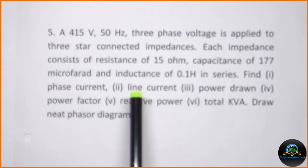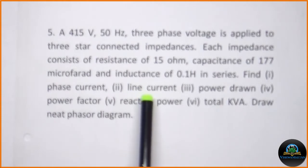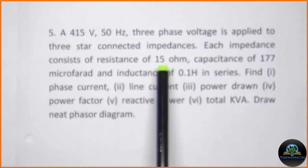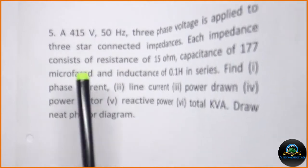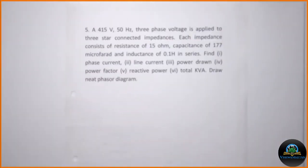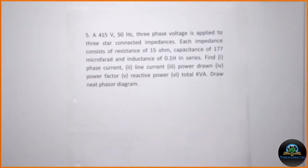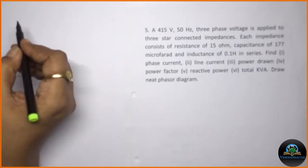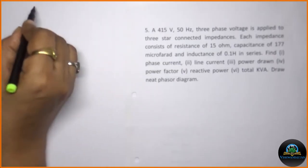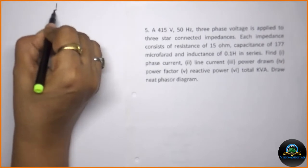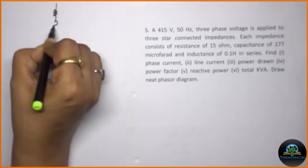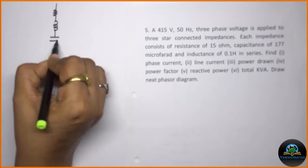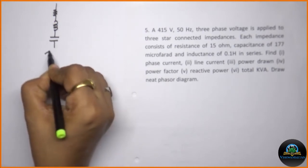While studying this particular problem, it is very clear that it is a combination of R, L, and C. First of all, we will try to draw the circuit for the same. It is a star connection with three components: resistance, inductance, and capacitance in each phase.